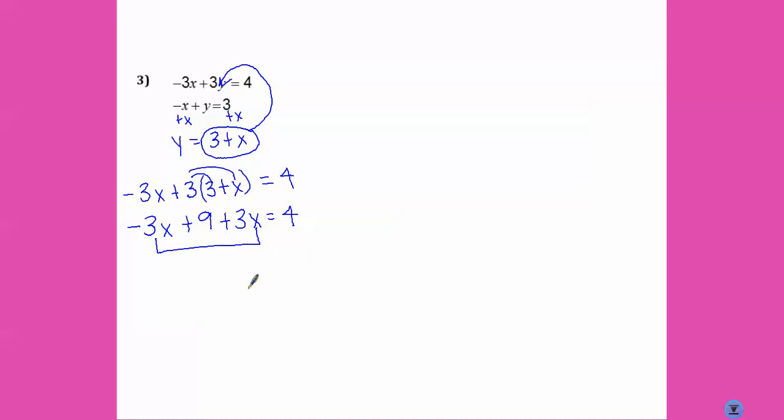Combine like terms. Negative 3X and positive 3X cancels out. I'm left with 9 equals 4. That means my system has no solution. Because 9 can't equal 4. That doesn't make sense.